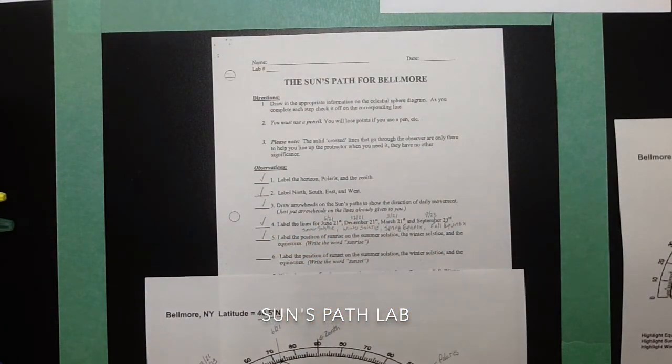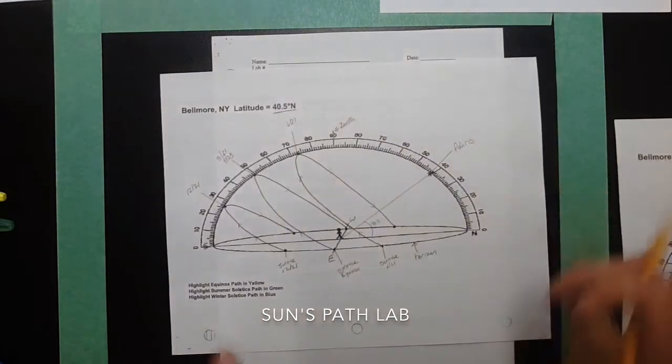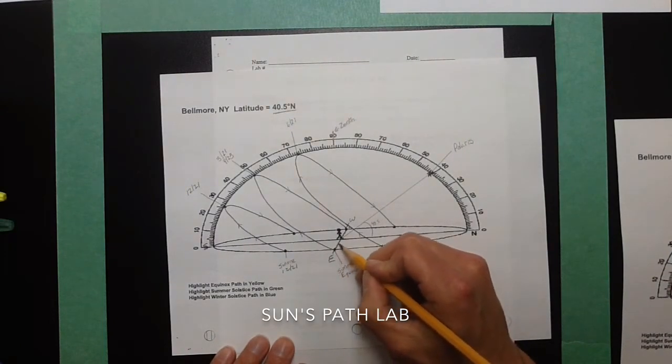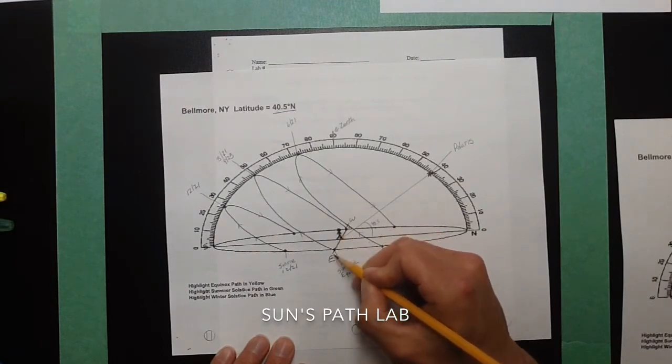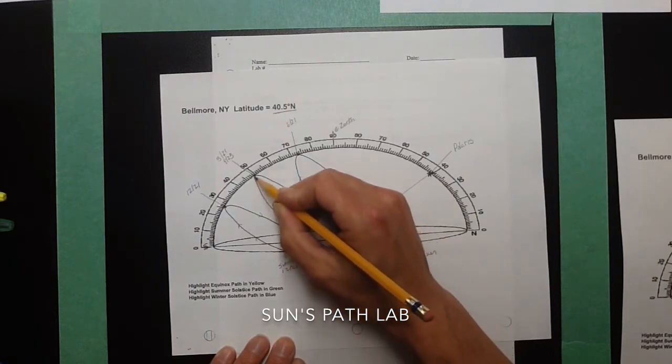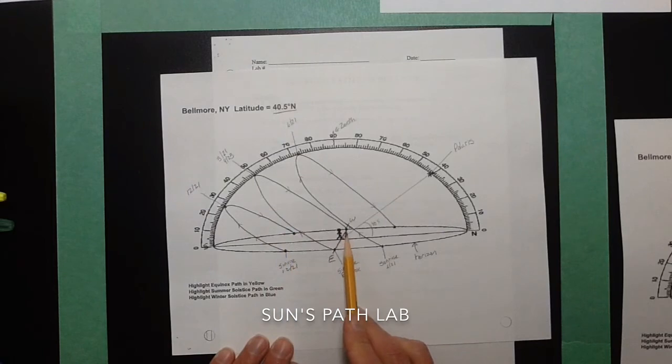Now, label the position of sunset. When you look at these diagrams, I'm looking at my east to west line, and it's not going perfectly across the page. It's going across at an angle. So the sun rises in the east, it gets higher until you hit solar noon, which is the maximum angle for the day, and then it sets in the west.